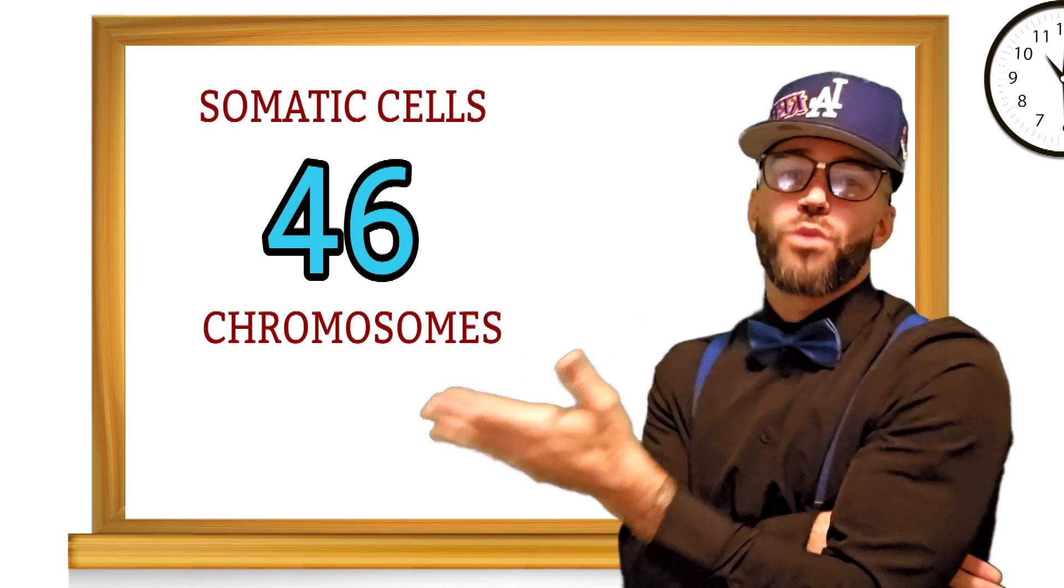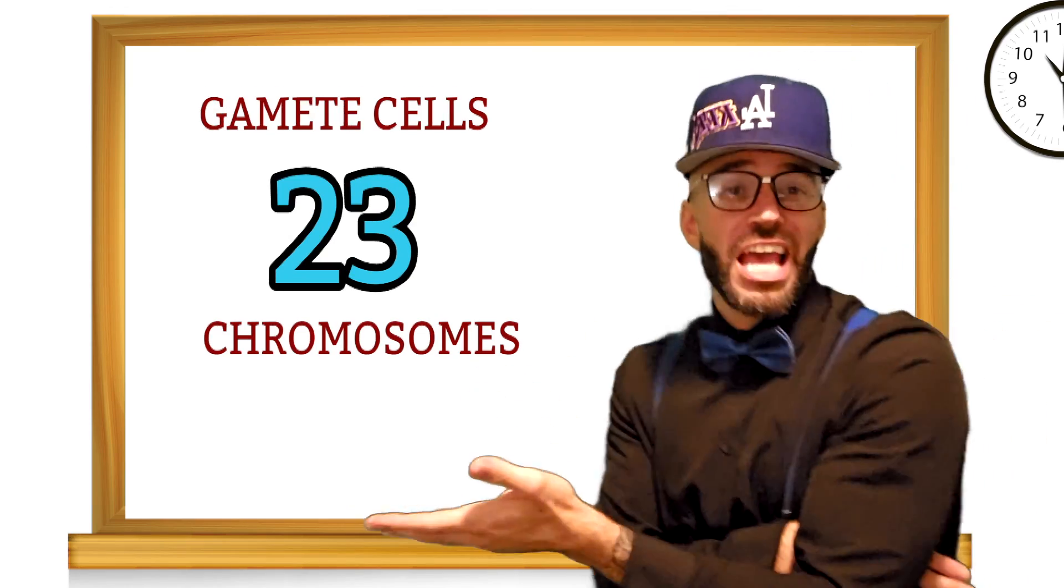Somatic cells have 46 chromosomes, gametes have 23.